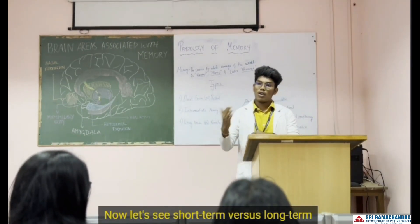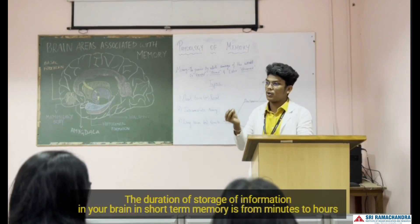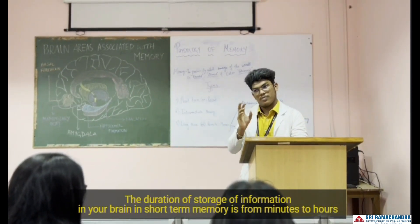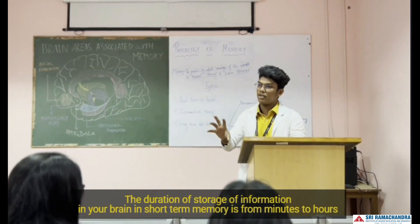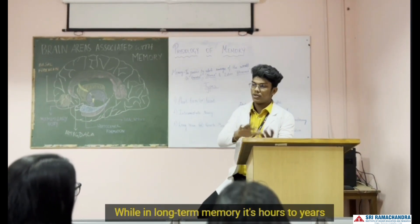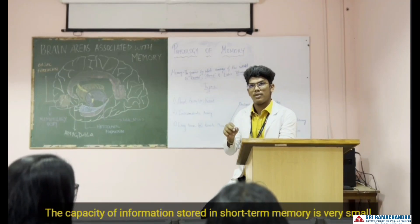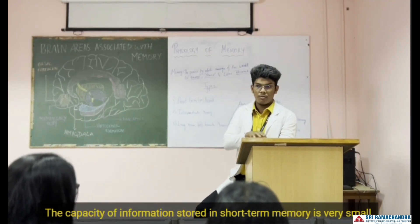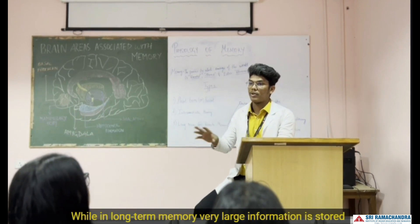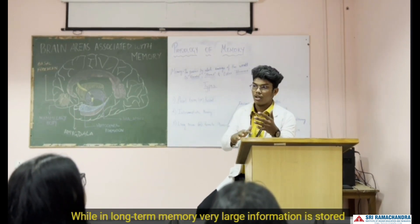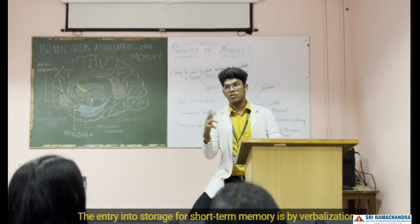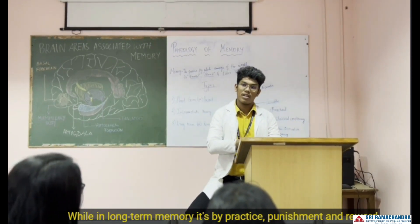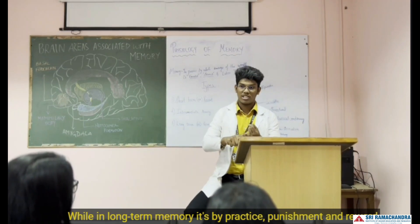Now let's compare short-term versus long-term memory. The duration of storage in short-term memory is from minutes to hours, while in long-term memory it lasts for years. The capacity of information stored in short-term memory is very small, while in long-term memory very large amounts of information are stored. The entry into storage in short-term memory is by verbalization, while in long-term memory it is by practice, punishment, and reward.